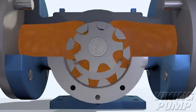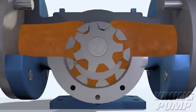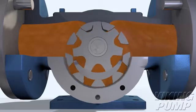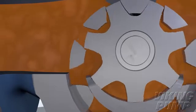The intermeshing gears of the rotor and idler form lock cavities for the liquid to ensure volume control. As the teeth come out of mesh, low pressure zones are created at the suction port, pulling liquid into the spaces.